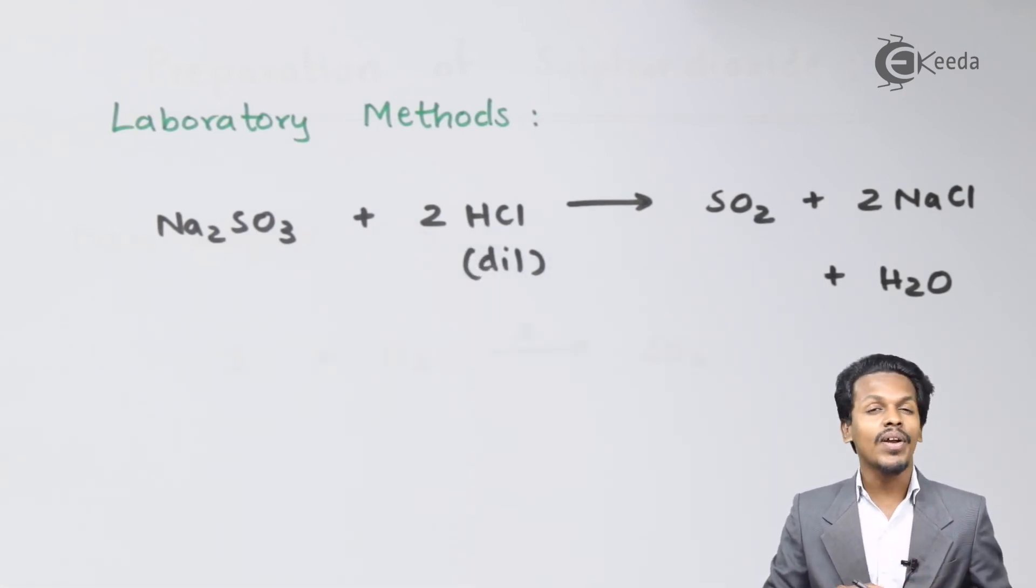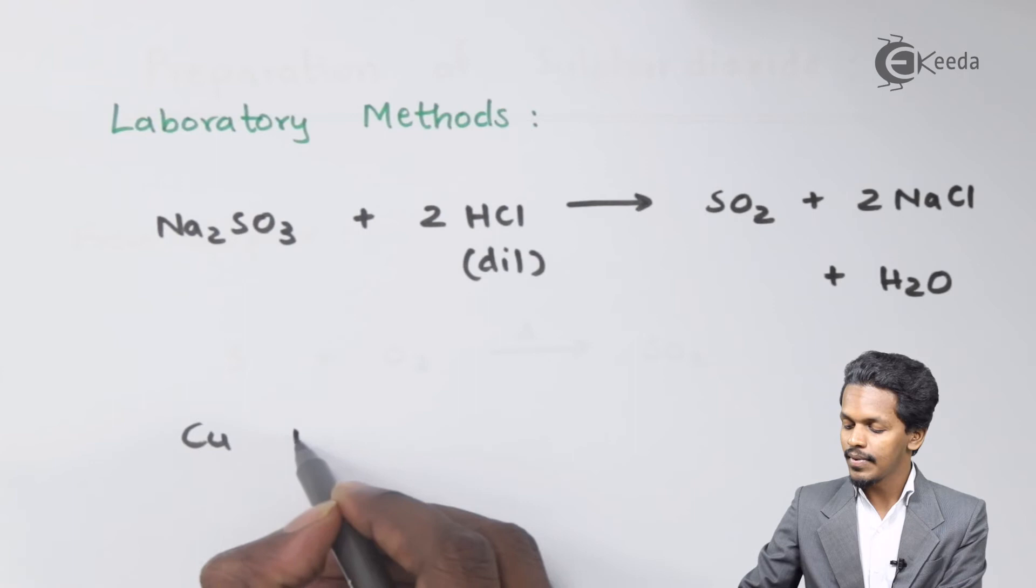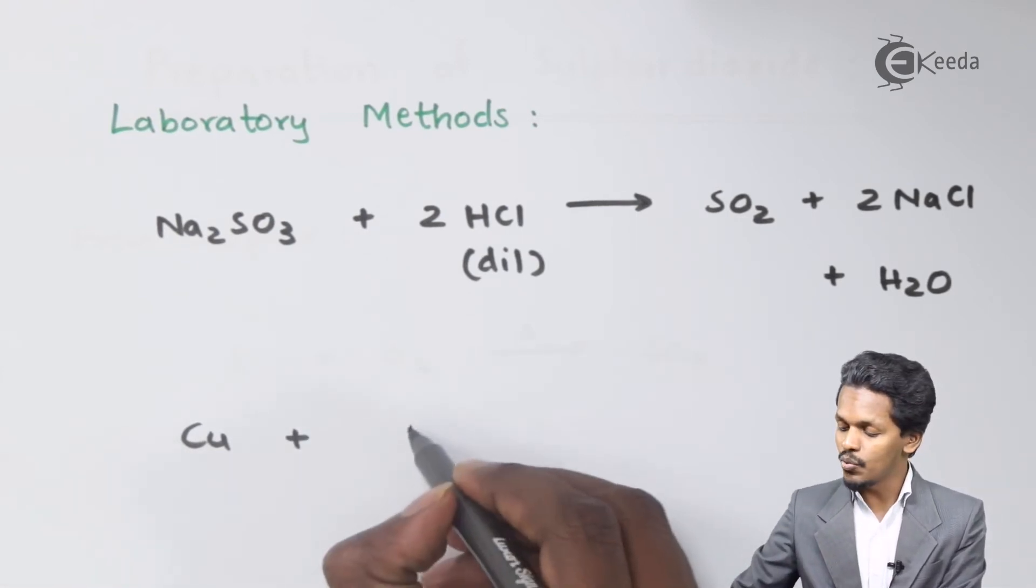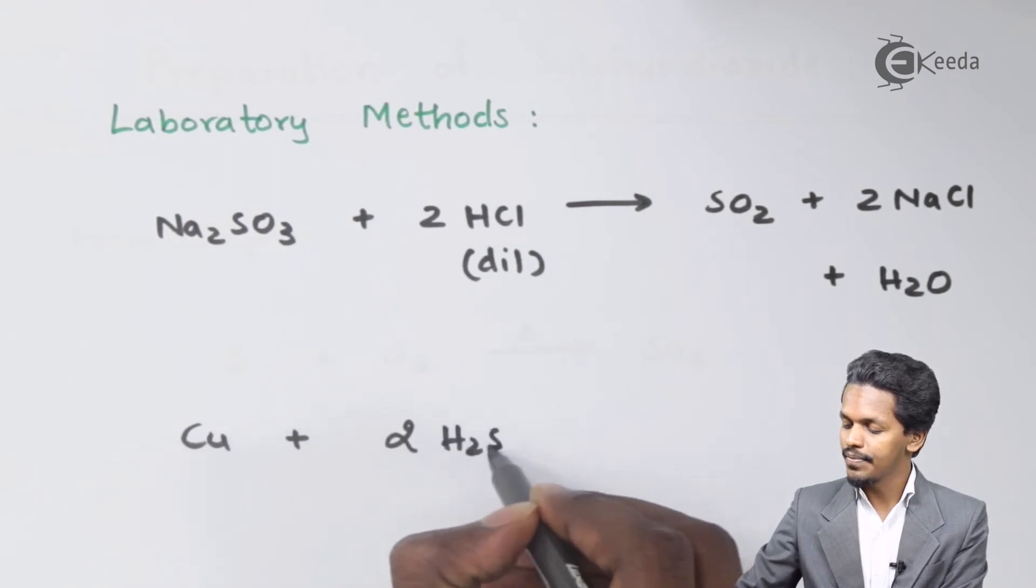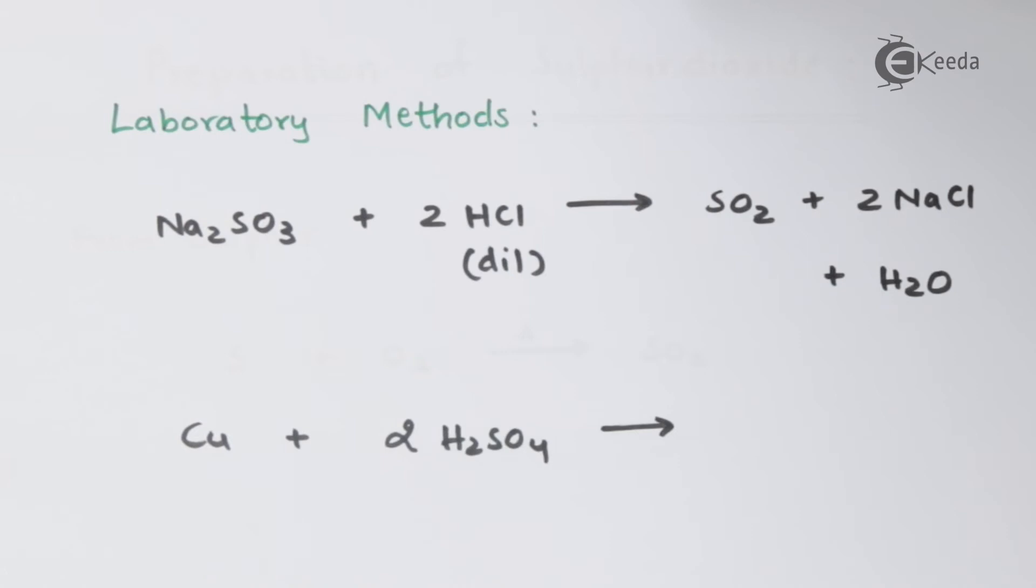Now for the next method: if we treat copper with concentrated sulfuric acid—that is, 2 moles of H₂SO₄—the compound we get on the product side would be CuSO₄.